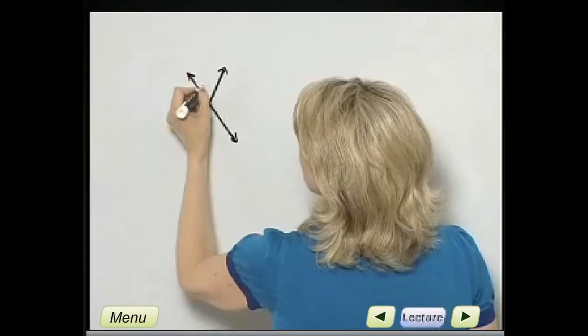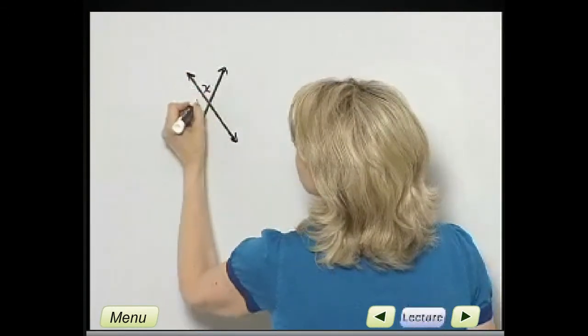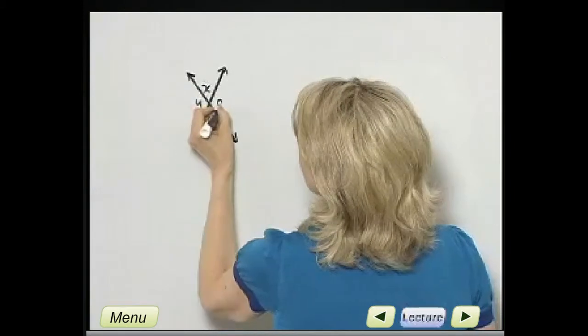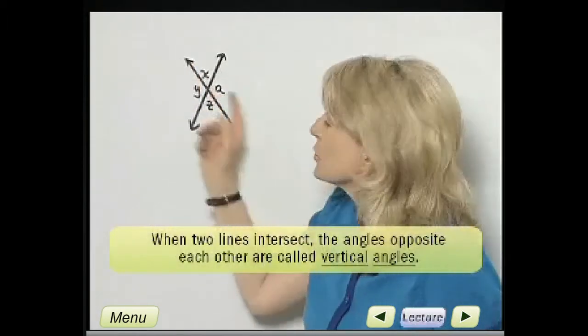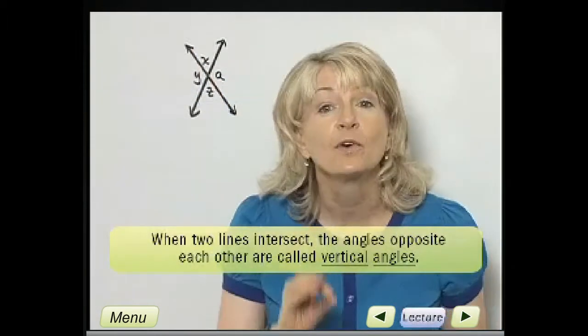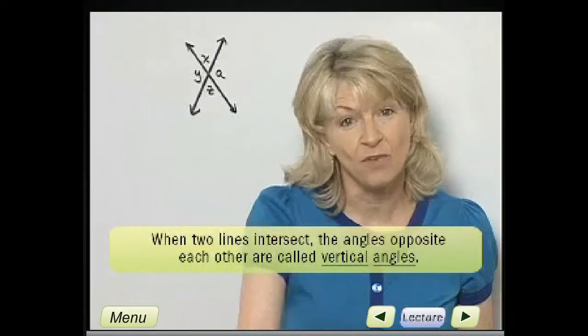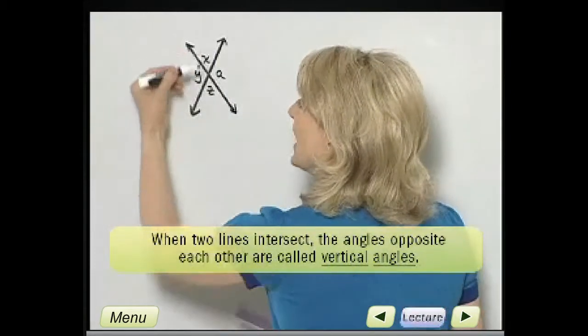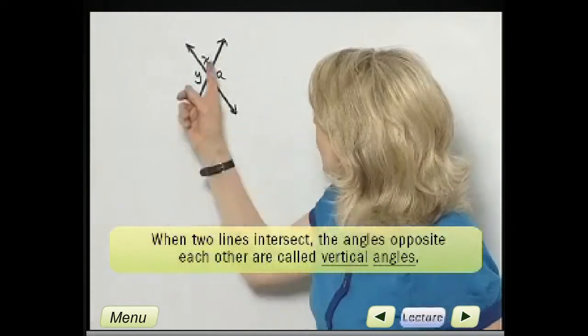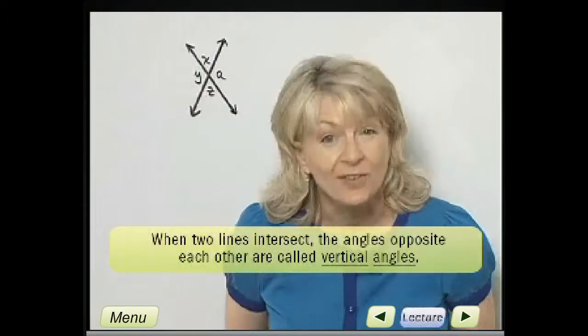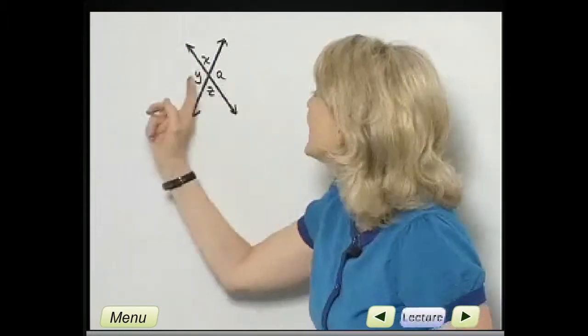Now, let's talk about, this is angle X, angle Y, angle Z, and angle A. Let's talk about what we mean by vertical angles. When two lines intersect at a point, vertical angles are formed. Vertical angles lie opposite each other. In other words, angle X and angle Z are vertical angles. Angle A and angle Y are vertical angles.